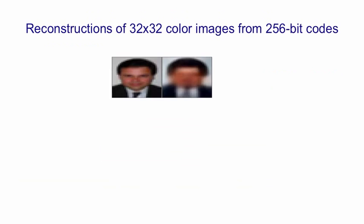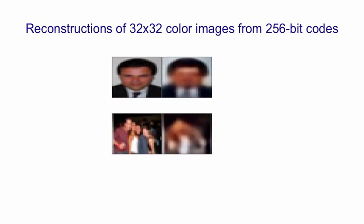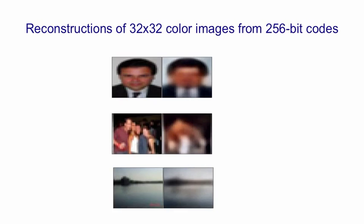The first question to ask is, how well does an autoencoder like this do at reconstructing the images? So here's a face image and its reconstruction — you can see that from the reconstruction, you can tell what kind of an image it is. Here's another example where it's a scene, probably at a party. Here's an outdoor scene, and you can see that the reconstruction captures a lot of information about the outdoor scene — it captures the water and the sky, and the fact that there's a thin strip of land.